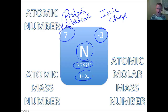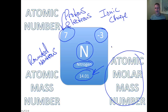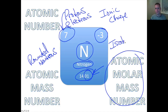Then we have one number here that has two different meanings. First, there's the atomic mass number, and we usually round it. This helps us calculate the number of neutrons in any given atom. We also have the atomic molar mass number — that's actually what this number is — because you can't have a portion of a subatomic particle. The atomic molar mass has to do with isotopes, and we're going to look at those later. But this is all the information you'll find for each individual element within the periodic table.